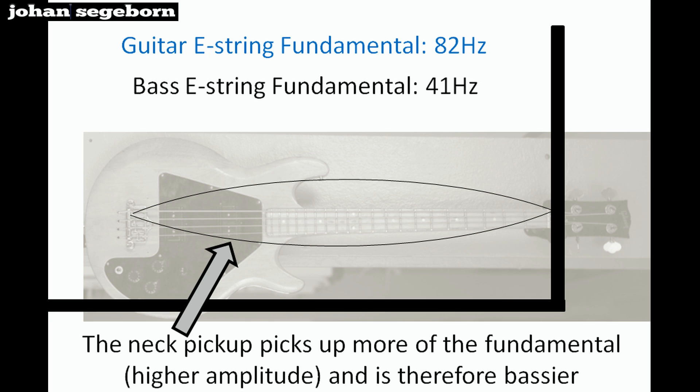The fundamental of an E-string, of the lower E-string of an electric guitar is 82 Hertz. You can see the amplitude is the biggest at the 12th fret in the middle. So the neck pickup, which is closest to that, picks up the most of the fundamental. So it's the bassiest microphone.